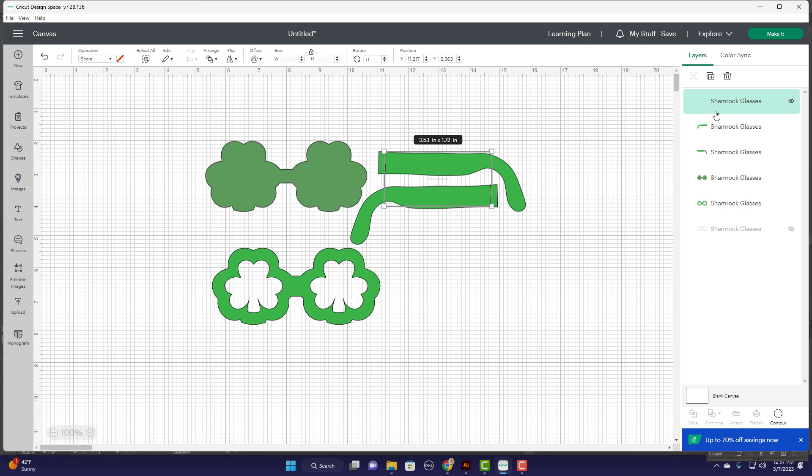And I need to attach that score line to the glasses, so I'm going to select all of them and hit attach. This is the portion that will be cut out using the cellophane, and this is the portion that will be cut out using the cardstock.